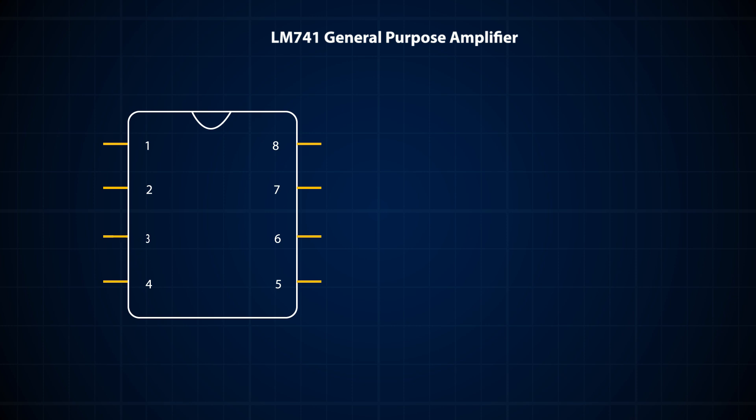The most common general purpose voltage amplifier, the LM741, comes equipped with 8 pins, which include the inverting and non-inverting inputs — more on that later — the output, two voltage supply pins, two offset null pins, and a no-connect pin.